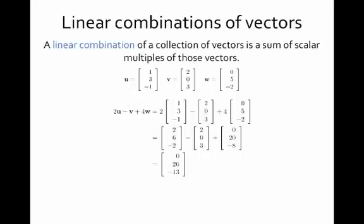I can form a linear combination — namely 2 times u minus v plus 4w. That's a linear combination of these vectors. I am creating scalar multiples of those vectors with scalars 2, negative 1, and 4, and then adding them together.